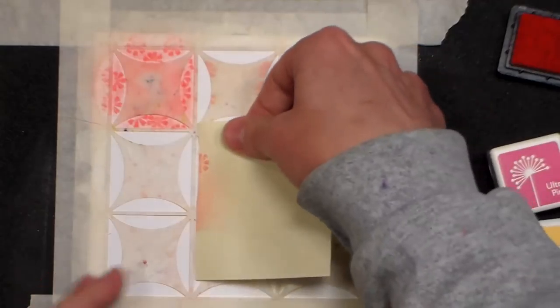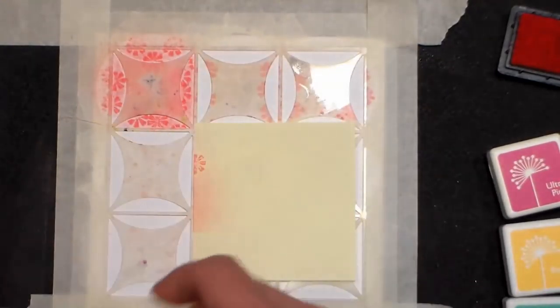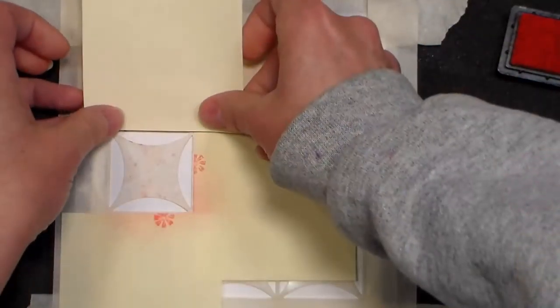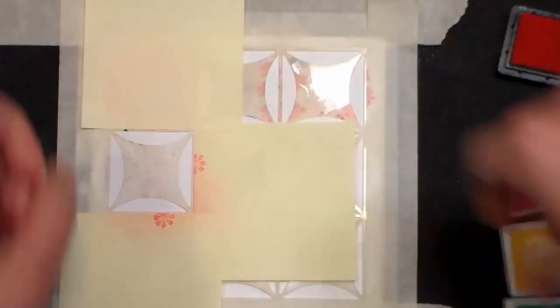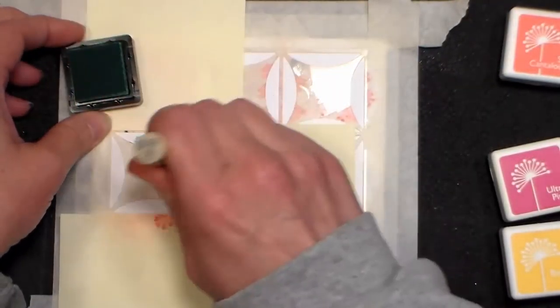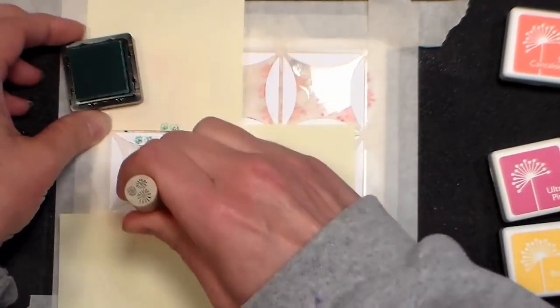Using a post-it note will protect those other cells if you're working with a stencil that's got narrow margins like I am here. You could try this with whatever pattern stencil you have and get some really unique effects. Just make sure if you're getting close to another stencil hole that you mask it off with some post-it notes so you don't get ink where you don't want it.